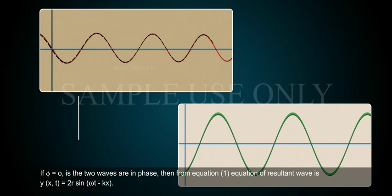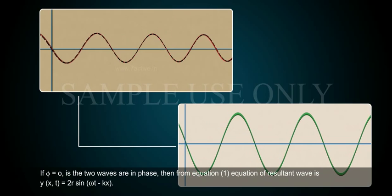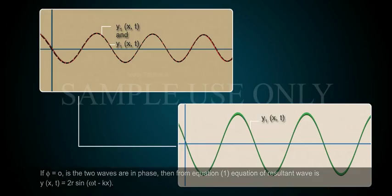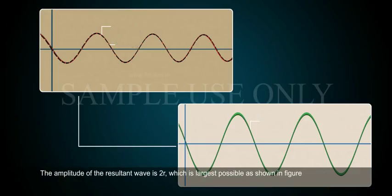If φ = 0, the two waves are in phase. Then from Equation 1, the equation of the resultant wave is y(x,t) = 2r·sin(ωt − kx). The amplitude of the resultant wave is 2r, which is the largest possible, as shown in the figure.